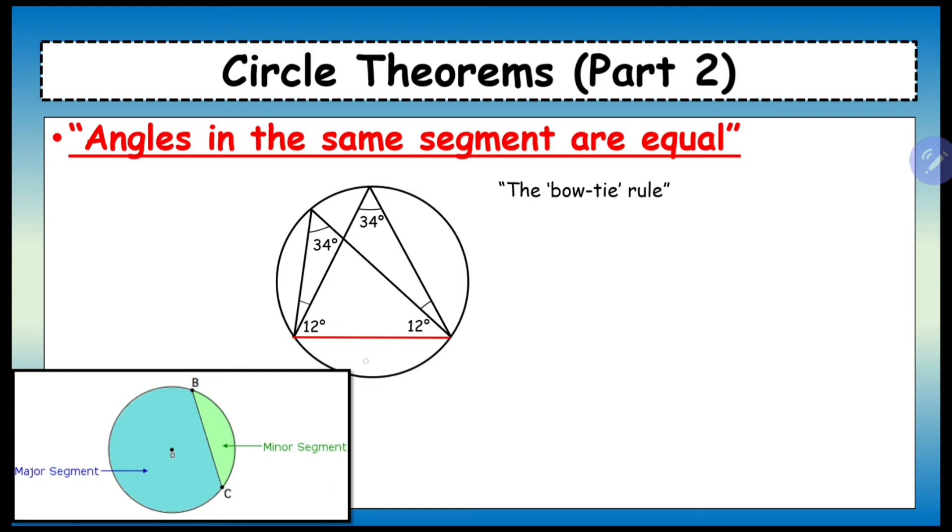Okay, this is the minor segment because it's smaller than the other side. So this is the major segment and all of these angles are in the same segment. Therefore, they are going to be equal. So if I was to draw another one from the same points, let's say if I was to draw another angle like this and it was going back down like that, that would also be 34 degrees since it's in the same segment.